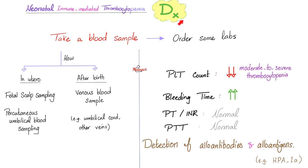Diagnosis is similar to ITP: we have thrombocytopenia due to an immune disease. Platelet count is low. Bleeding time is prolonged because the low number of platelets means they collectively don't function as much. PT, INR, and PTT are normal because coagulation factors are fine.